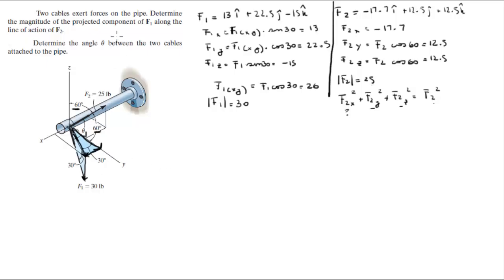So you want to find the projection of F1 along F2. What you have to do is you have to find the unit vector of F2. The unit vector along F2 is found by dividing the vector by the magnitude. So the 17.7, the 12.5, and the 12.5 are going to be divided by 25, and you're going to get the vector that you want. The vector is going to come out to be negative 0.708i plus 0.5j plus 0.5k.